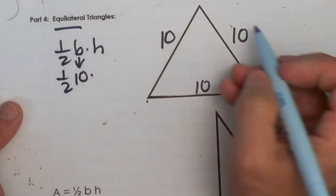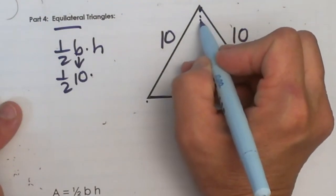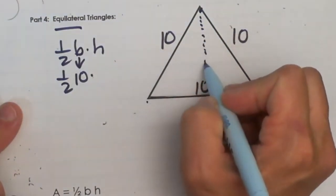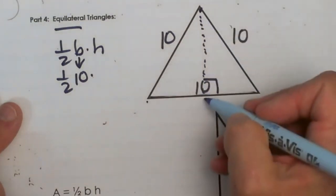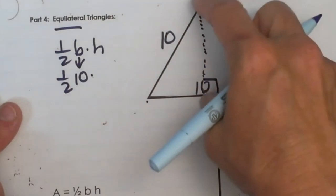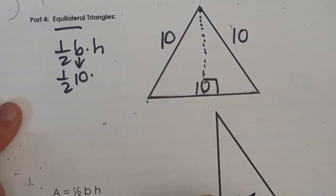Now do we know the height? Height is always from the apex, which is the top vertex, down perpendicular to the opposite side. So I've drawn in an altitude here to be the height. We don't know that length. How can we figure it out?